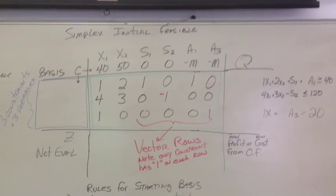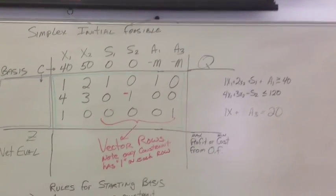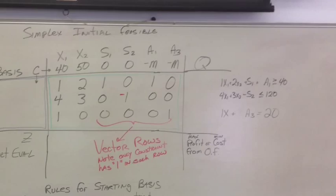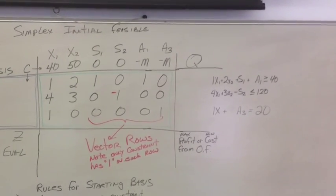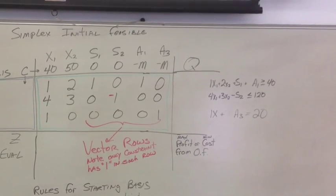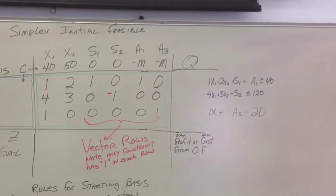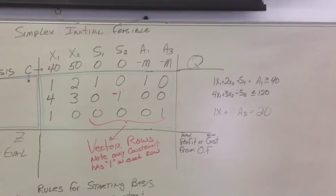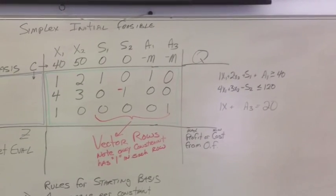Okay, in the middle, in our substitution rate, these are just our initial constraints. You don't have to write the constraint to the right. I just did it to help you visualize what's going on. We have 1x1 plus 2x2 plus 1s1 plus an artificial variable, a1, all right? Same thing with constraint 2, same thing with constraint 3.